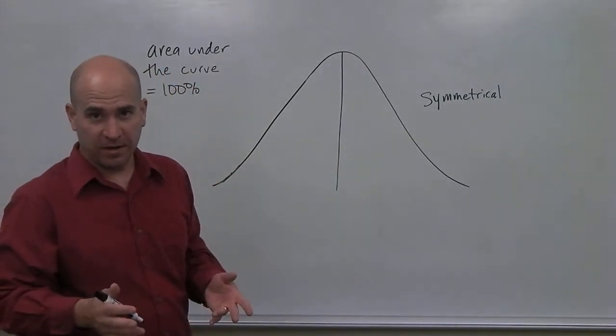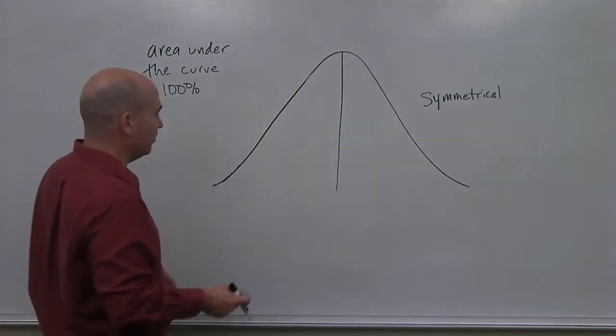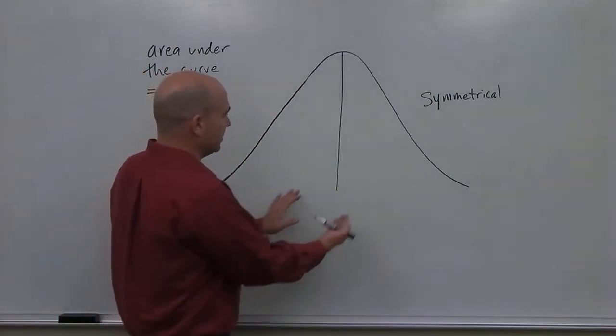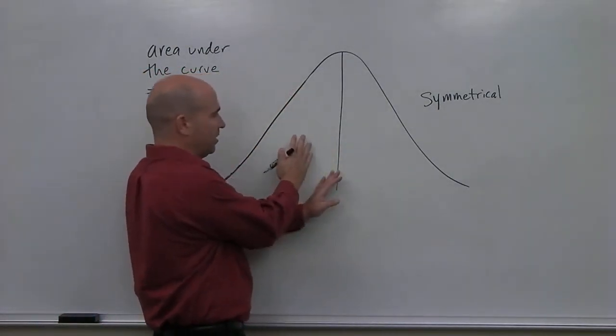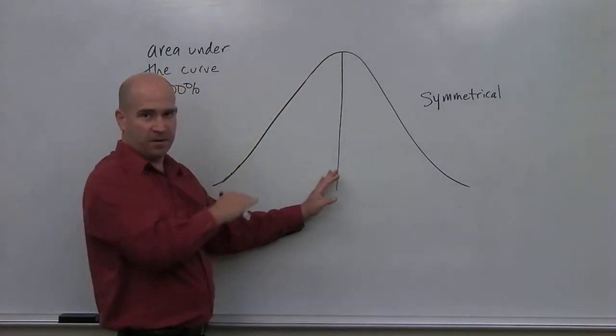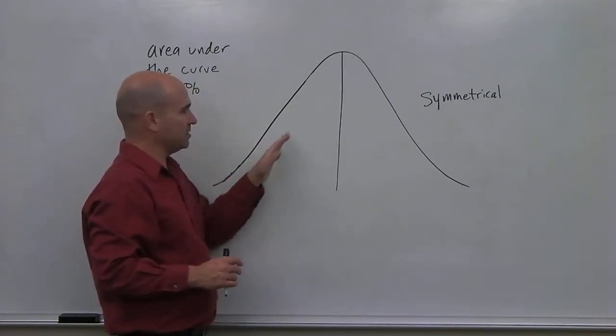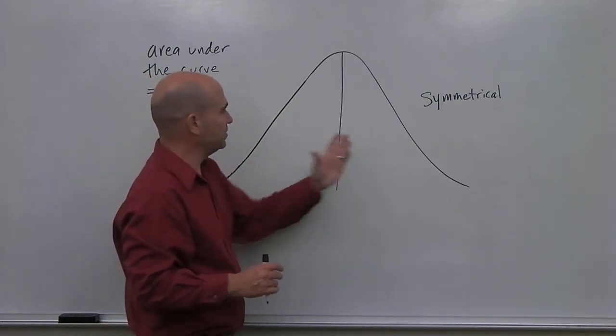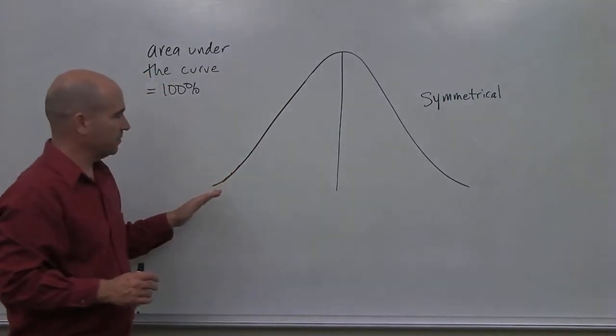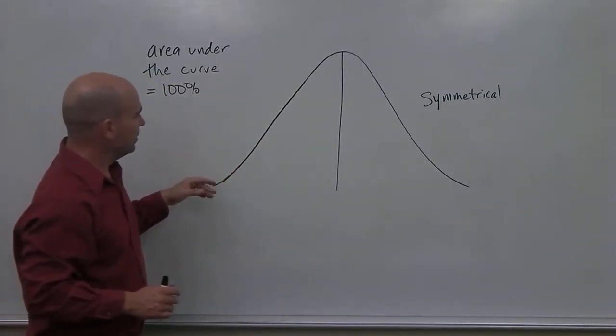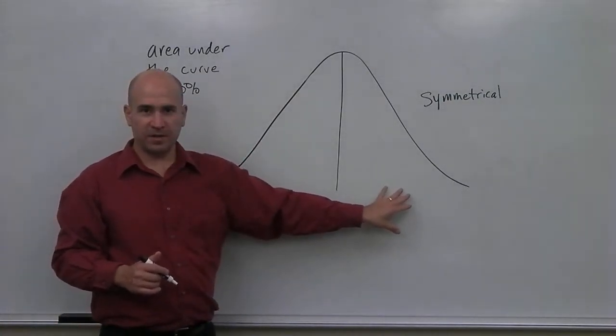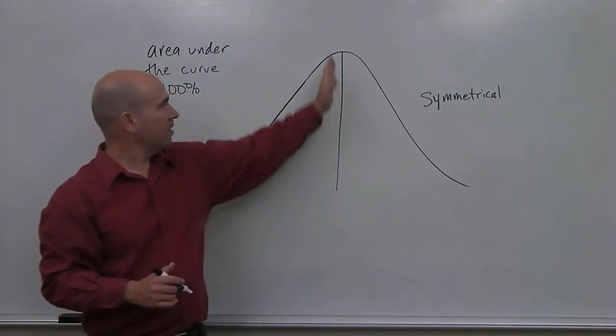Now, this is assuming my drawing is perfect, which it's not, but let's just assume it is. If this was flipped over here, it would perfectly fit with no overlap at all. So you fold this over, it fits perfectly. Right? If that's true, then what percent should fall on each side here of the center?